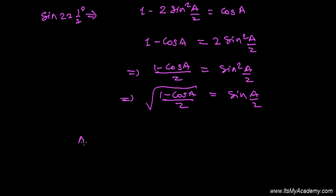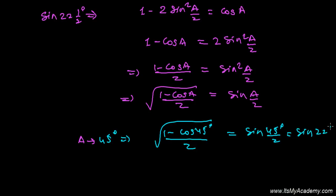What happens if A equals 45 degrees? If A equals 45 degrees, I'll get 1 minus cos 45° divided by 2, which equals sine 45° divided by 2, which is also sine 22.5 degrees.